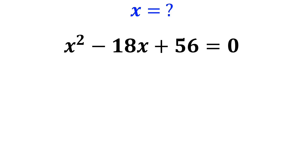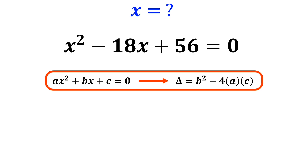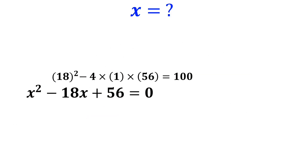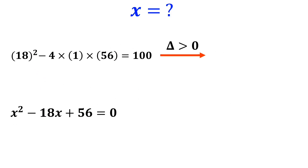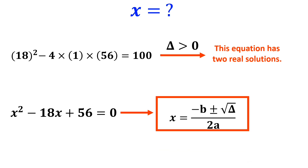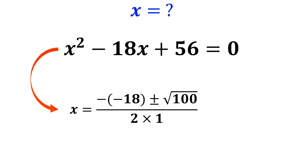In a quadratic equation, the value of delta is found using the formula: delta equals b squared minus 4 times a times c. So the value of delta for this equation is negative 18 squared minus 4 times 1 times 56, which equals 100. Since delta is greater than 0, this equation has two real solutions. The value of x is found using: x equals negative b plus or minus the square root of delta, divided by 2a. So x equals negative of negative 18 plus or minus the square root of 100, divided by 2 times 1.